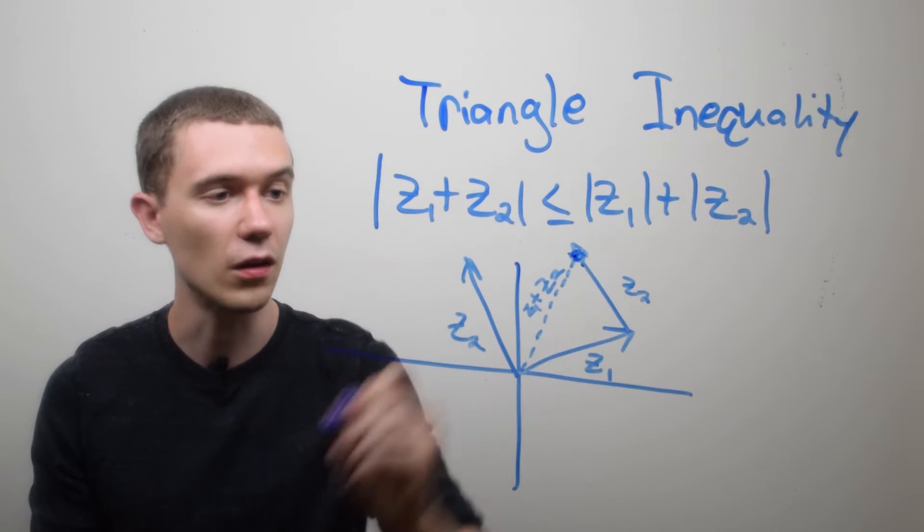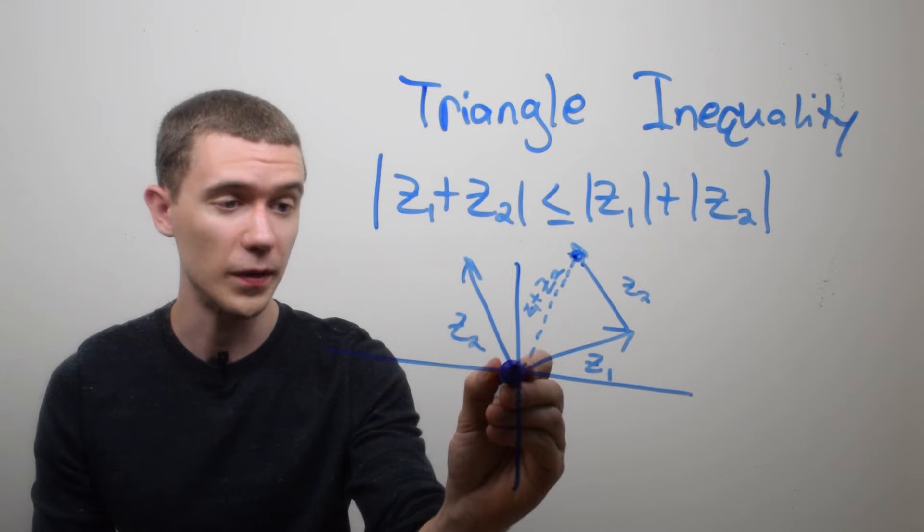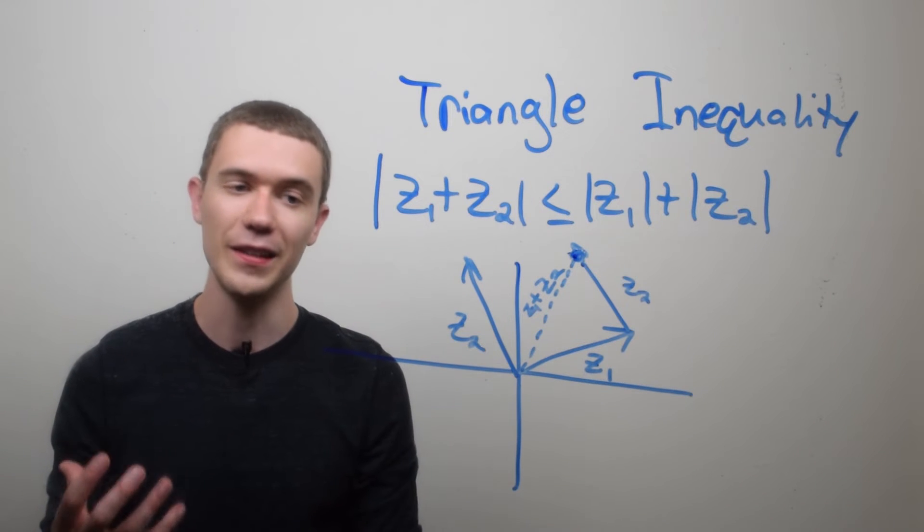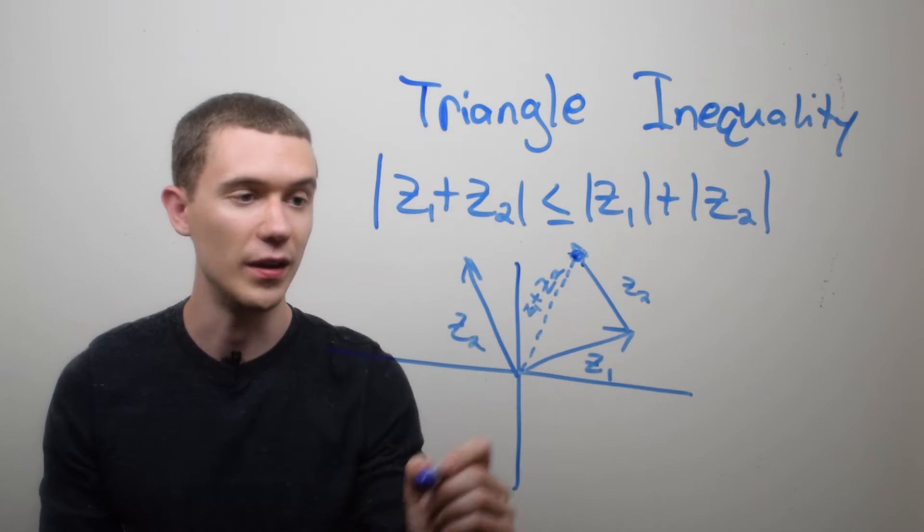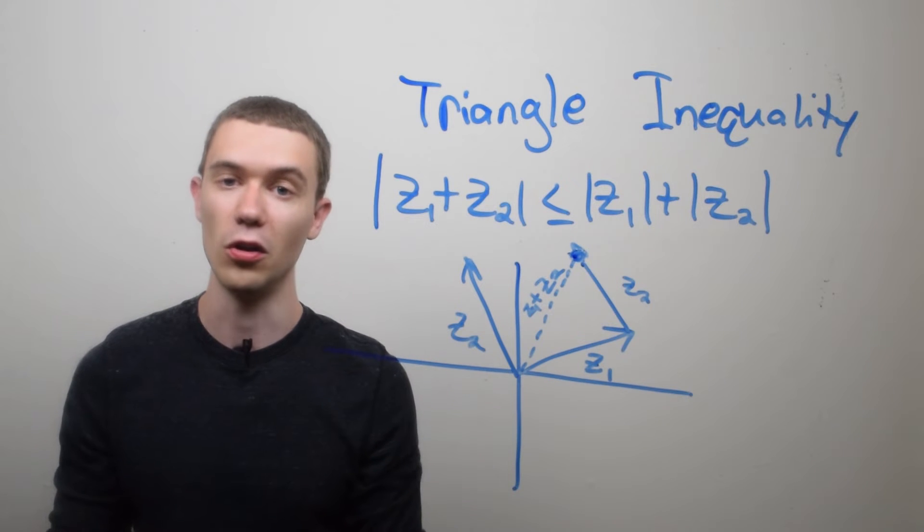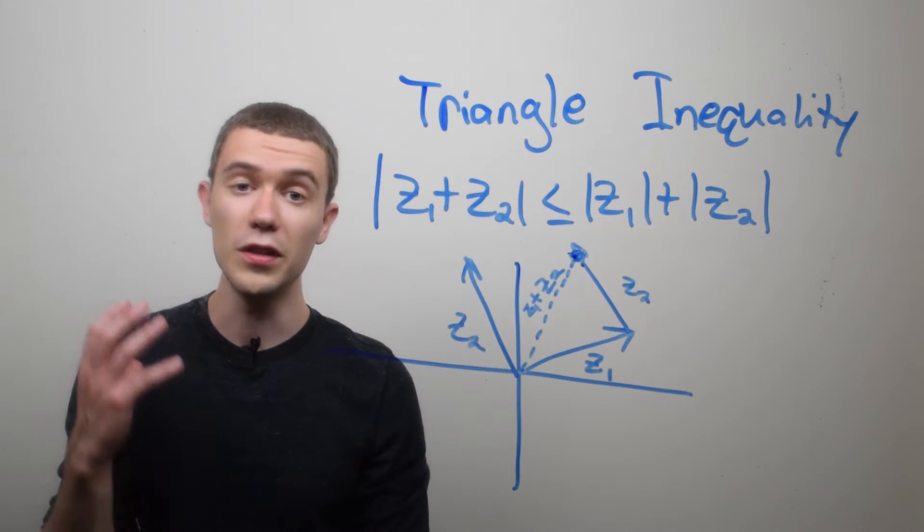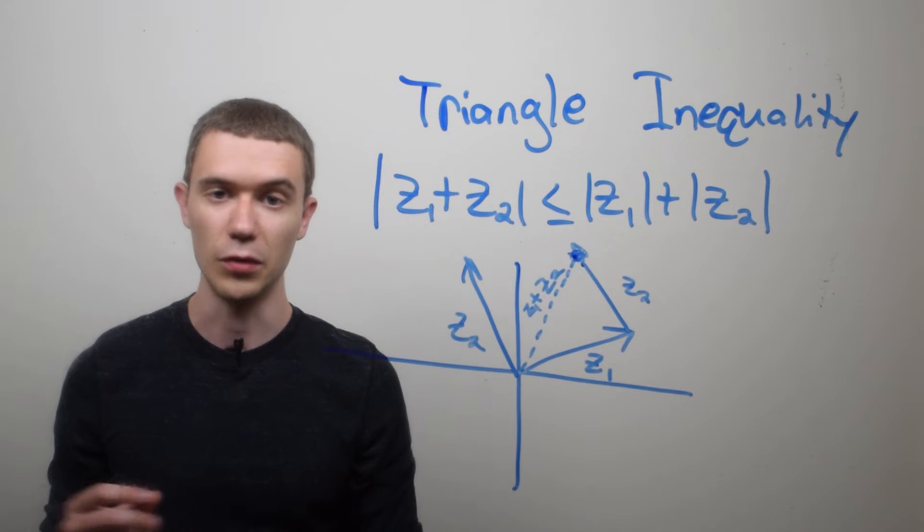So if I'm trying to end up here, the shortest distance would just be traveling from z1 plus z2. That definitely means that going z1 and then going z2 has to be longer. Or in other words, this inequality has to be true. Now we can use the triangle inequality to find upper bounds for complex numbers.